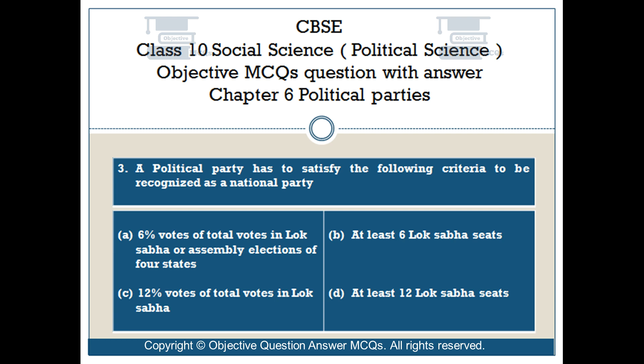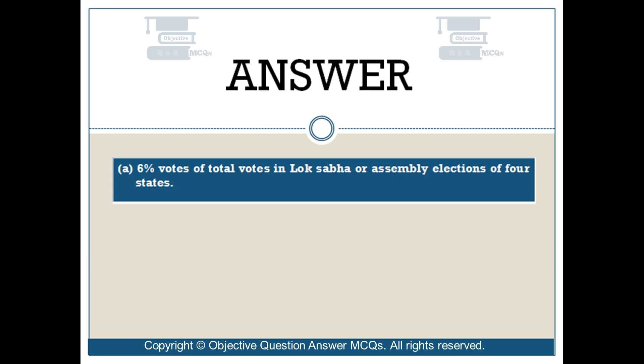Option C: 12% votes of total votes in Lok Sabha. Option D: at least 12 Lok Sabha seats. The right answer is Option A: 6% votes of total votes in Lok Sabha or Assembly elections of 4 states.